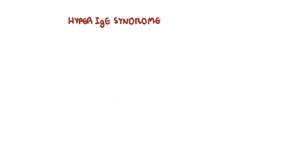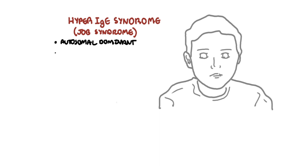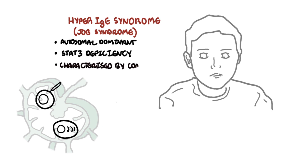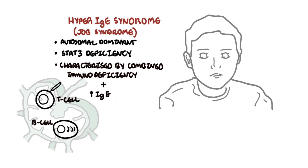The other well-defined syndrome with immunodeficiency is hyper immunoglobulin E syndrome, also known as Job syndrome. This is an autosomal dominant condition — classically a multi-system disorder resulting from STAT3 deficiency, a protein important in the intracellular signaling pathway. Job syndrome is characterized by combined immunodeficiency, meaning deficiencies of both B cells and T cells, as well as marked elevation of serum immunoglobulin E — thus the name hyper immunoglobulin E syndrome.